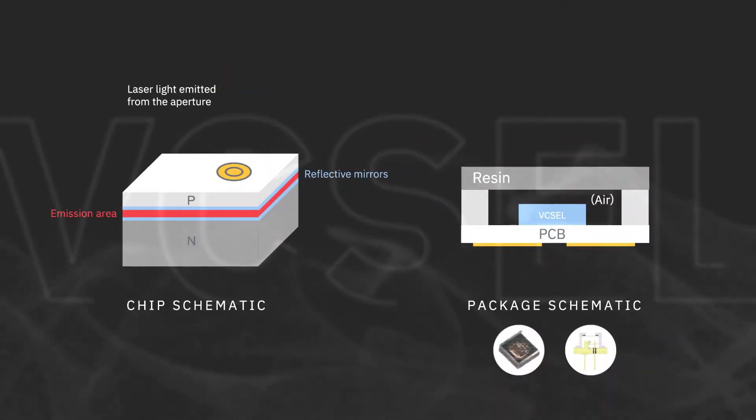VCSELs use quantum wells to generate photons between reflective Bragg layers that provide optical amplification, with a surface aperture that emits the laser light vertically from the device.